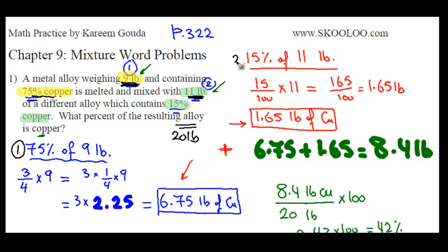Then we get the amount of copper in the second alloy, which is 15% of 11 pounds. 15 over 100 times 11 equals 15 times 11 is 165, over 100 is 1.65 pounds. Now we know how much copper there is in alloy number one and we know how much copper there is in alloy number two. Now add them. You get 6.75 plus 1.65 equals 8.4 pounds of copper.